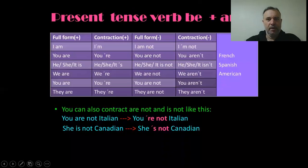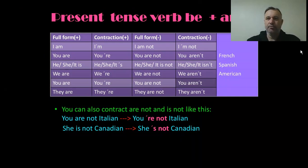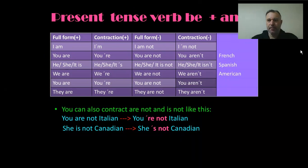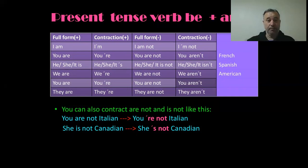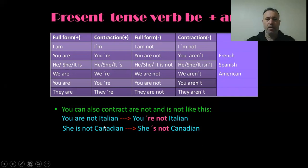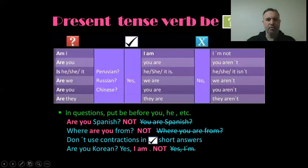First of all, we have to remember the present tense of the verb 'be' and its contracted forms. I am, you are, he is, she is, it is, we are, you are, they are. You can also contract the negative forms: 'you are not Italian' becomes 'you're not Italian' or 'you aren't Italian.' 'She is not' becomes 'she isn't.' These mean the same thing.